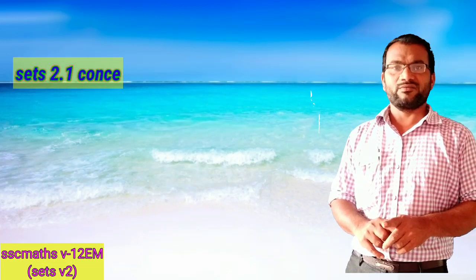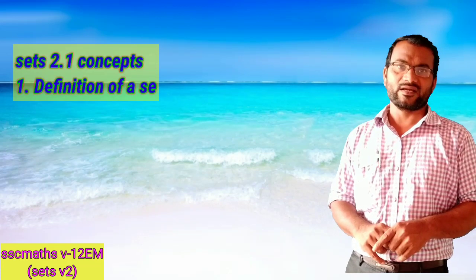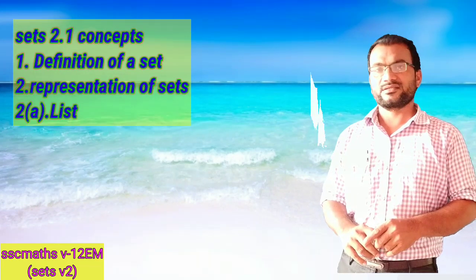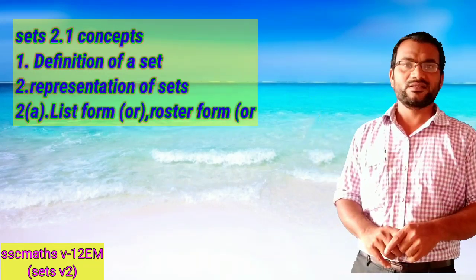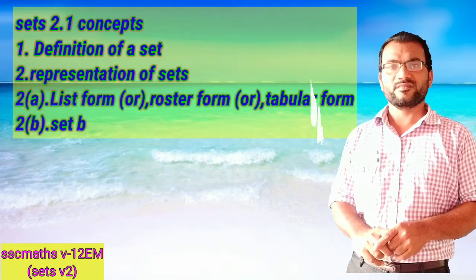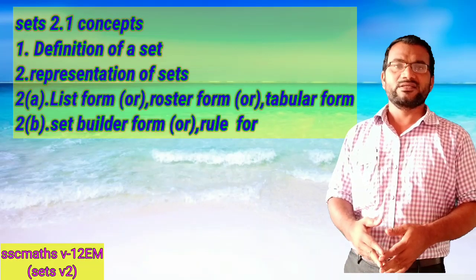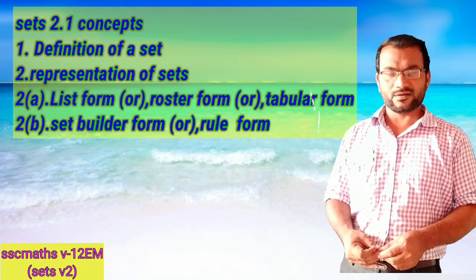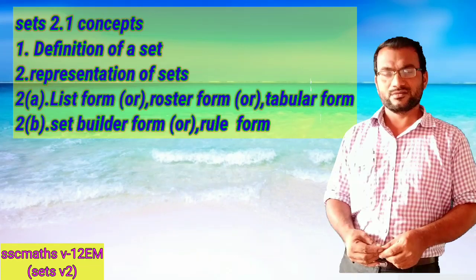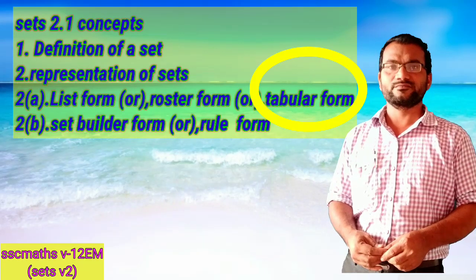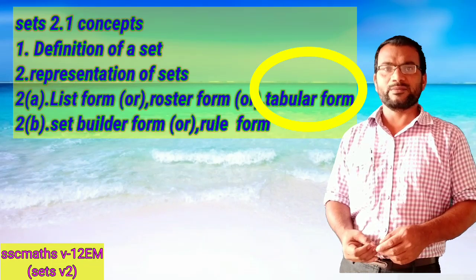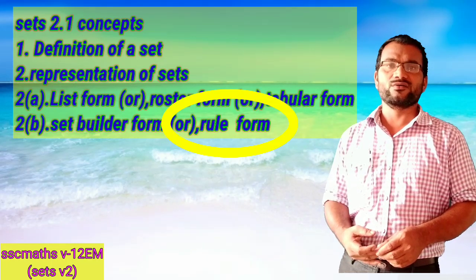The first concept is the definition of sets, and the second is the representation of sets in two ways: list form and set builder form. List form is also called tabular form, and set builder form is also called rule form.